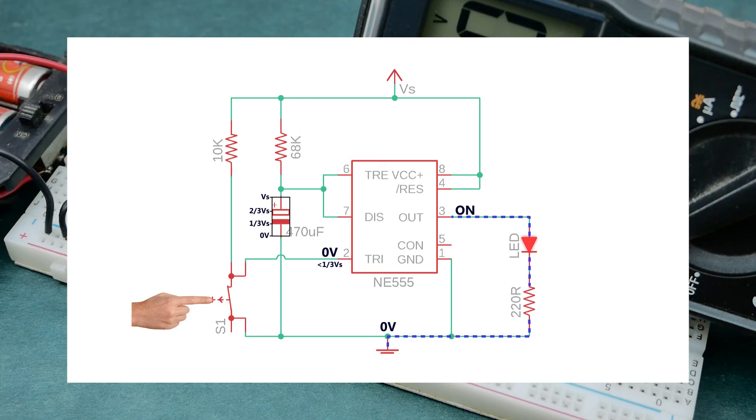Simultaneously, the discharge pin disconnects internally from 0V, so now the capacitor starts charging via the resistor or potentiometer that connects it to positive rail.